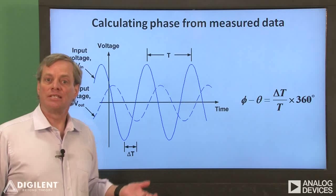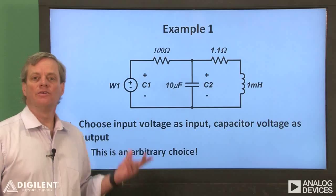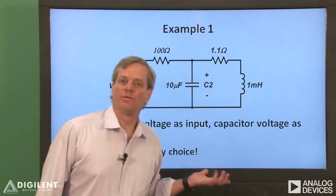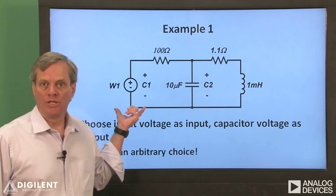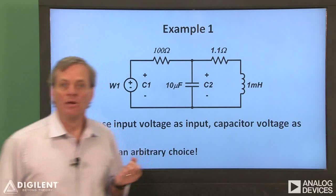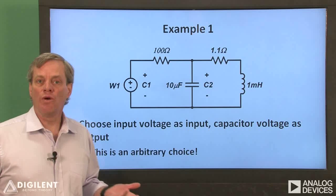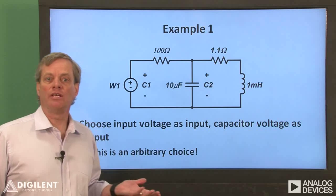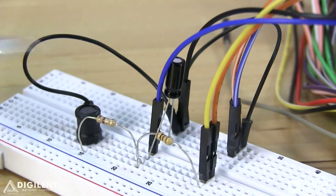Now let's take some measurements and see how they correspond to gain and phase difference. Here's an example circuit we'll use to illustrate these concepts. We'll define our input as the applied voltage and our output as the voltage across this 10 microfarad capacitor. Please keep in mind that this choice is somewhat arbitrary. If we choose two other parameters in the circuit, we'll generally end up with different magnitude and phase responses.